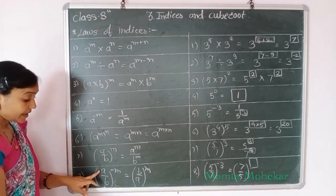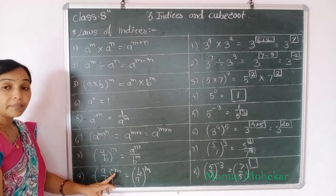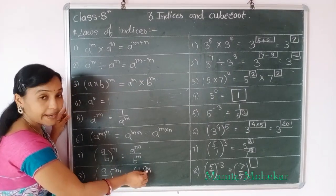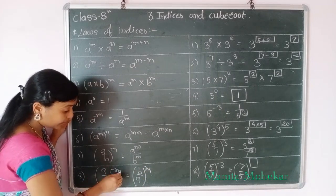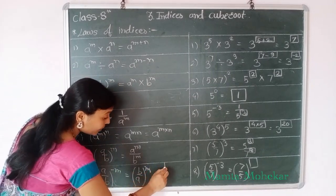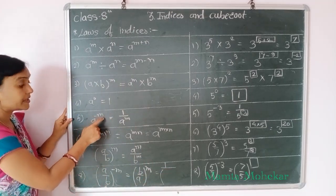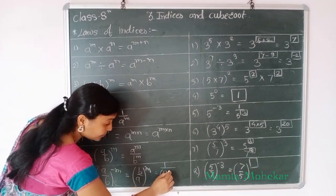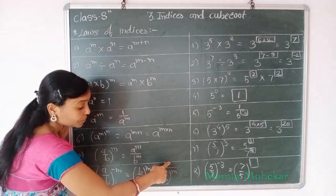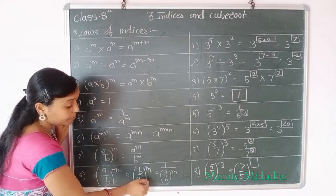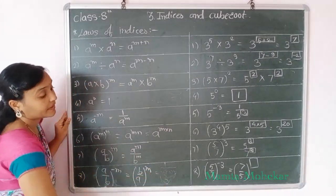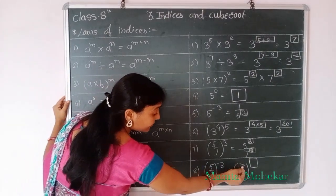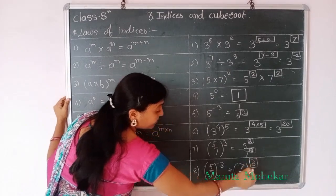Now next rule is: A by B, bracket to the power minus M, is equal to B by A, bracket to the power M. Because the power is negative, if we do the reciprocal it becomes positive. So we can write A by B to the power minus M as B by A bracket to the power M. Example: 5 by 7 raised to power minus 3 is equal to 7 by 5 to the power 3.